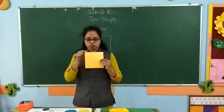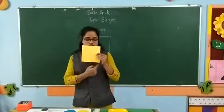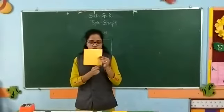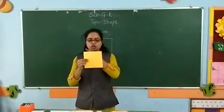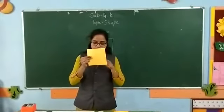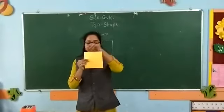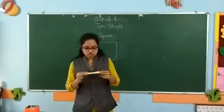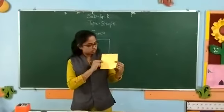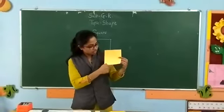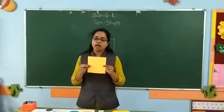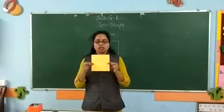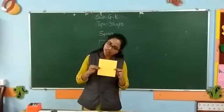Square has four sides and four corners. What does it have? Four sides and four corners. And children, can you notice? All these sides are the same. Square has four sides and all sides are equal.